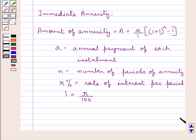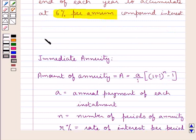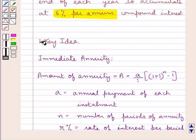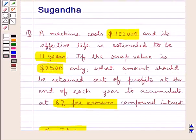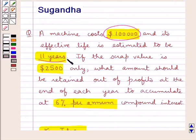This is the key idea that we use in this question. Let us now move on to the solution. From the question we have that the cost of the machine is $100,000 and its effective life is estimated to be 11 years.